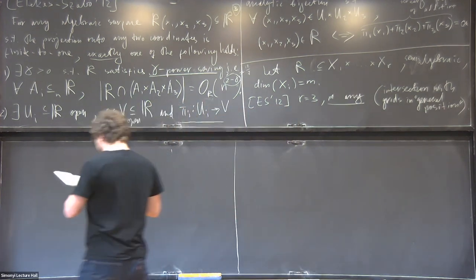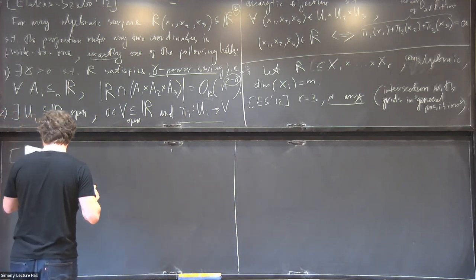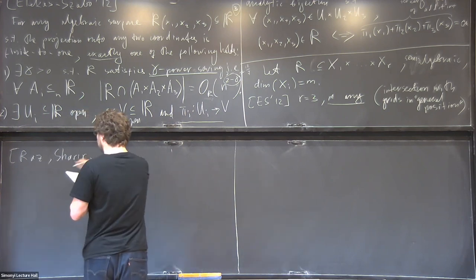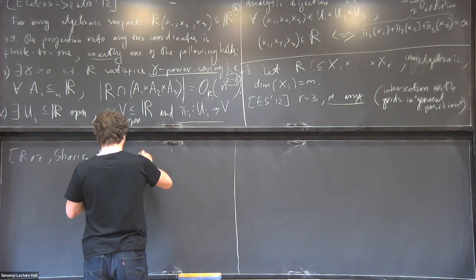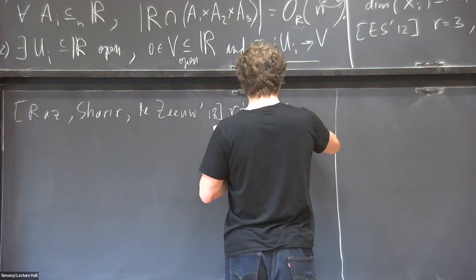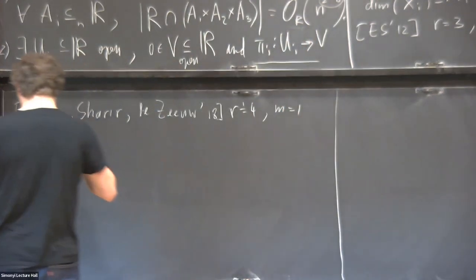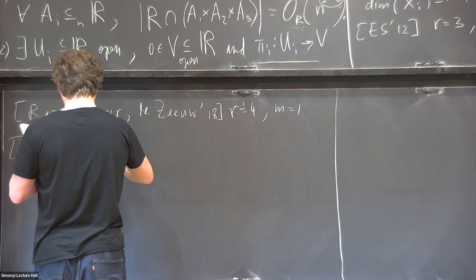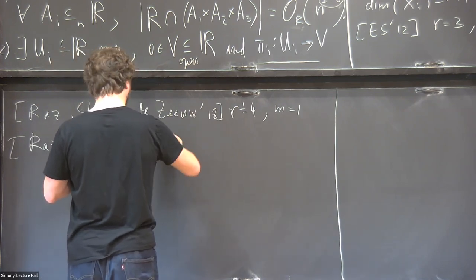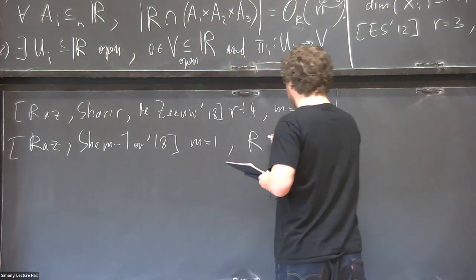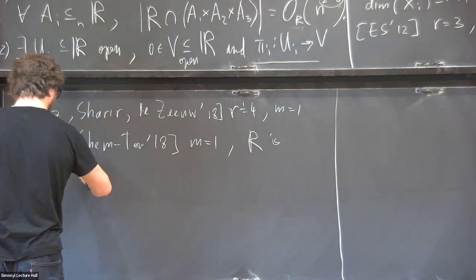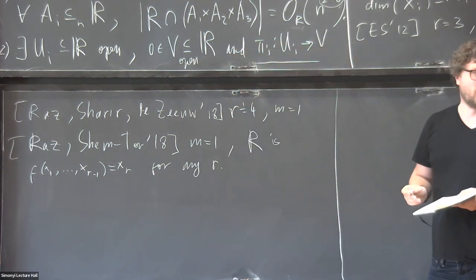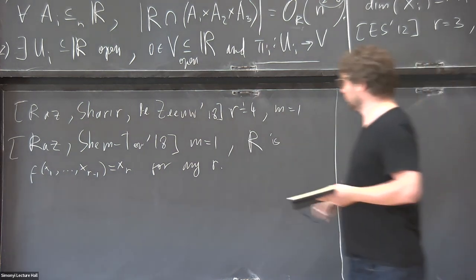Arit had several improvements. For example, Raz-Sharir proved the case r=4, m=1 in 2019 and improved the bounds. Then for arbitrary arity there was work of Raz-Shem-Tov from 2018, with m=1 and R of the form f(x₁,…,x_{r−1}) = x_r for any r — a generalization of Elekes-Rónyai to polynomials in any number of variables.